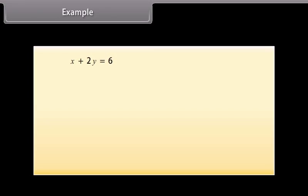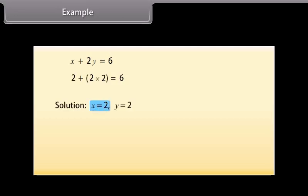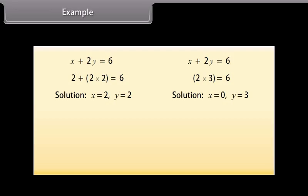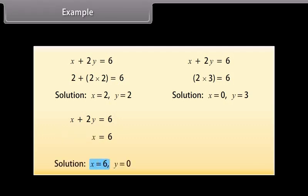Let's now find four different solutions for the equation X plus 2Y is equal to 6. X is equal to 2, Y is equal to 2 is a solution because substituting gives 6. Now let us choose X as 0 — the equation reduces to 2Y is equal to 6, so Y is equal to 3. Thus (0, 3) is also a solution. Taking Y as 0, the equation reduces to X is equal to 6, so (6, 0) is also a solution.